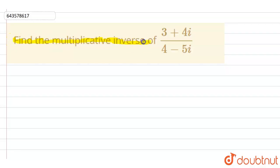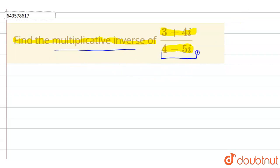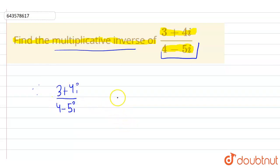Hello everyone. The question is: find the multiplicative inverse of (3 + 4i) / (4 - 5i). So basically in this question we have to find the multiplicative inverse of the given function. First of all, let us write what we have given: 3 + 4i upon 4 - 5i. This is our given function.